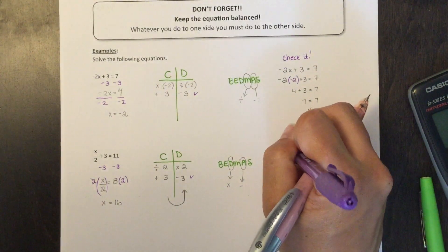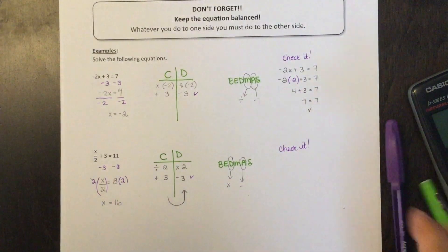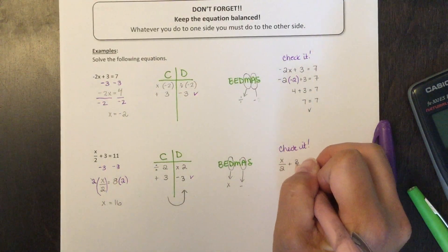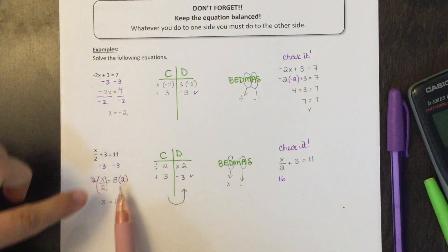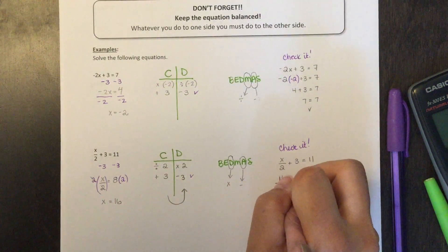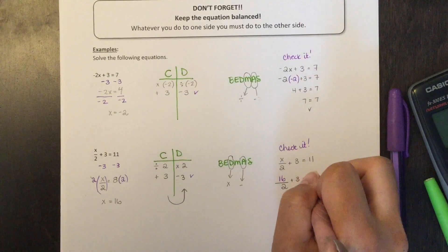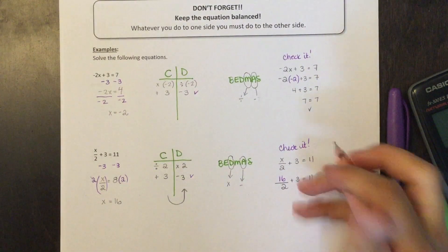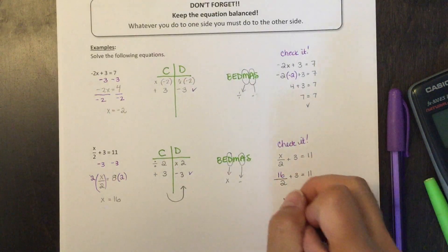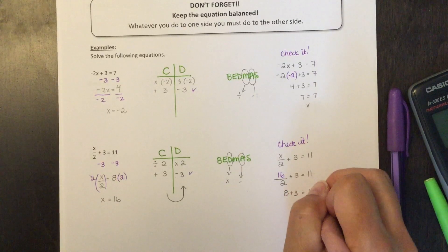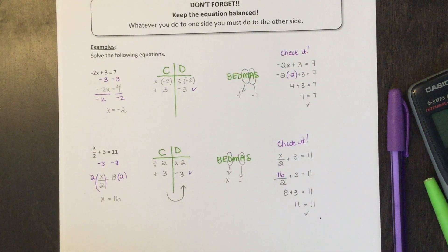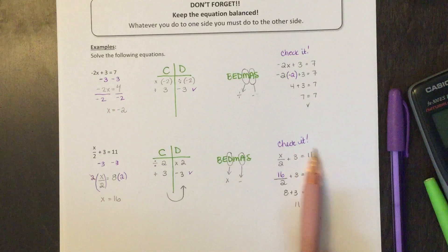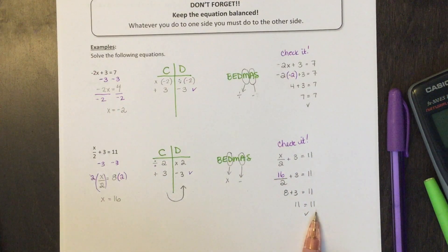Let's check it and make sure we got it right. I have x over two plus three equals eleven. I replace x with the value we found — 16. So 16 divided by 2 is 8, plus 3 — left side is 11, right side is 11. Right on, excellent! You're always simplifying each side of the equation until hopefully you have the same number on both sides.